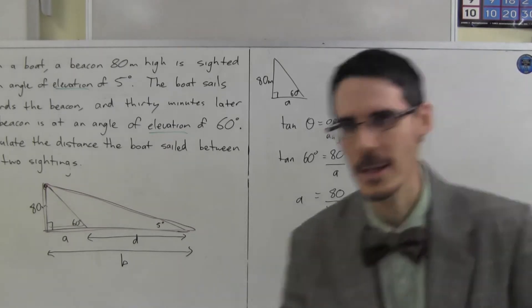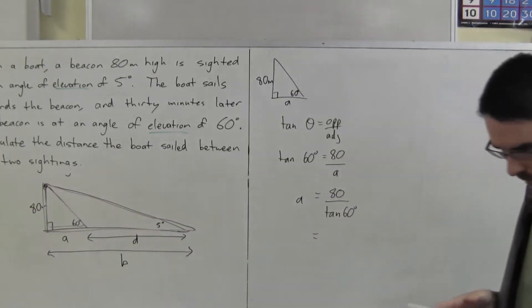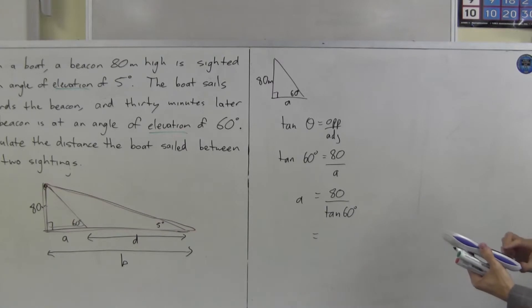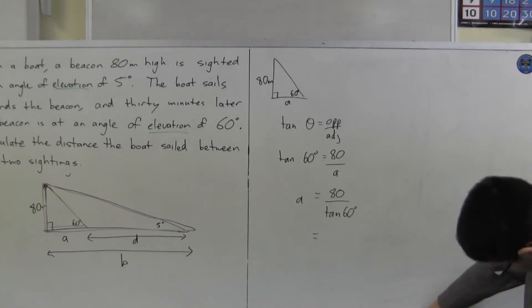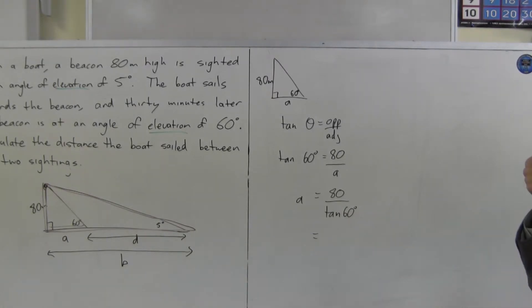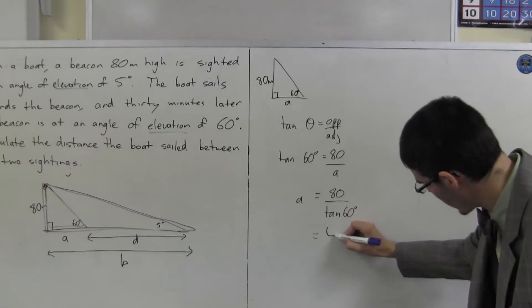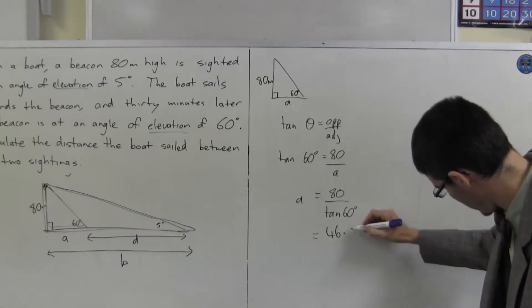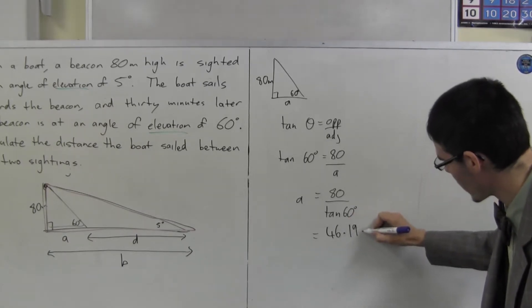And in my calculator. 46. Oh. What accuracy do I need? It's a boat. Centimetres is more than I need. So, 46.19 metres.